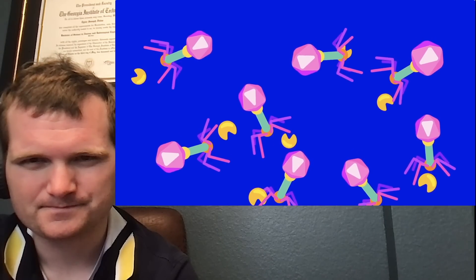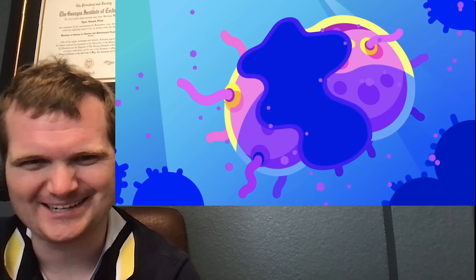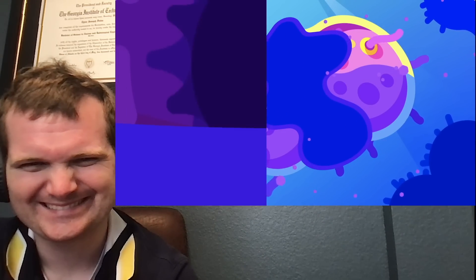They produce endolysin, a powerful enzyme that punches a hole in the bacteria. The pressure is so high that the bacteria sort of vomits out all of its insides and dies. New phages are released and this happens all the time, and they begin the cycle anew.